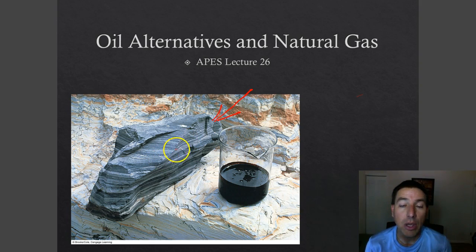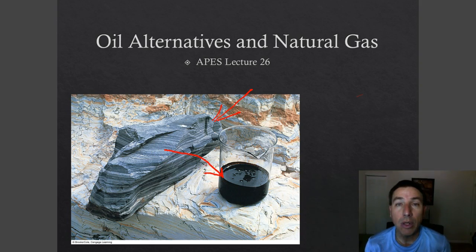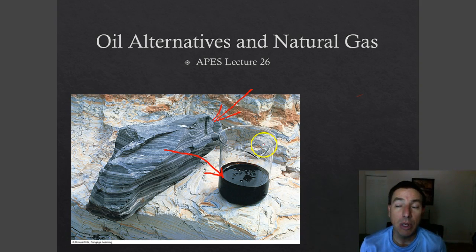We can extract those small deposits now. This is oil shale, and if we take that and put it through the right process we can actually get crude oil out of it. We're going to talk about these oil alternatives — there are a couple of them — and then we'll get into natural gas.